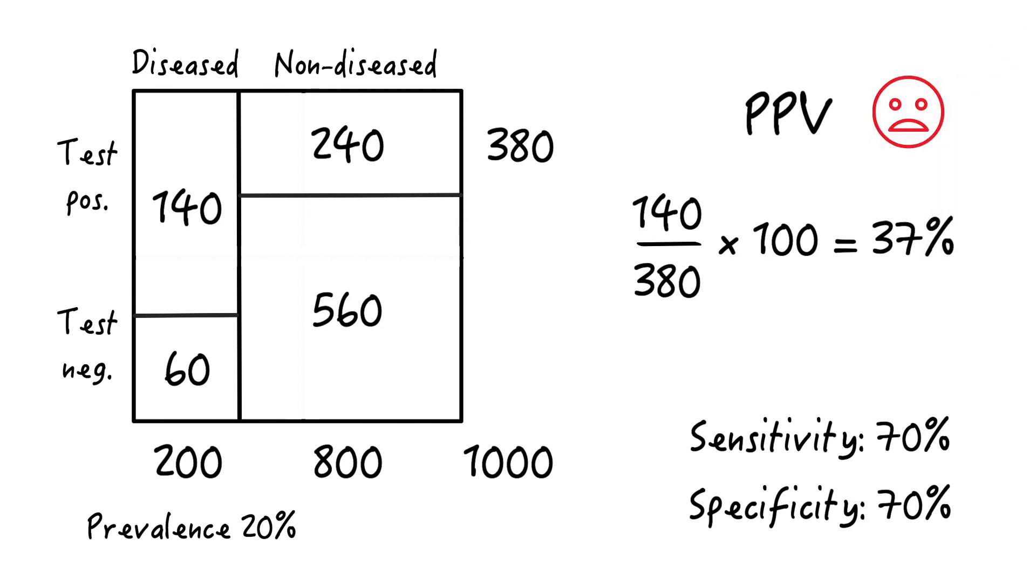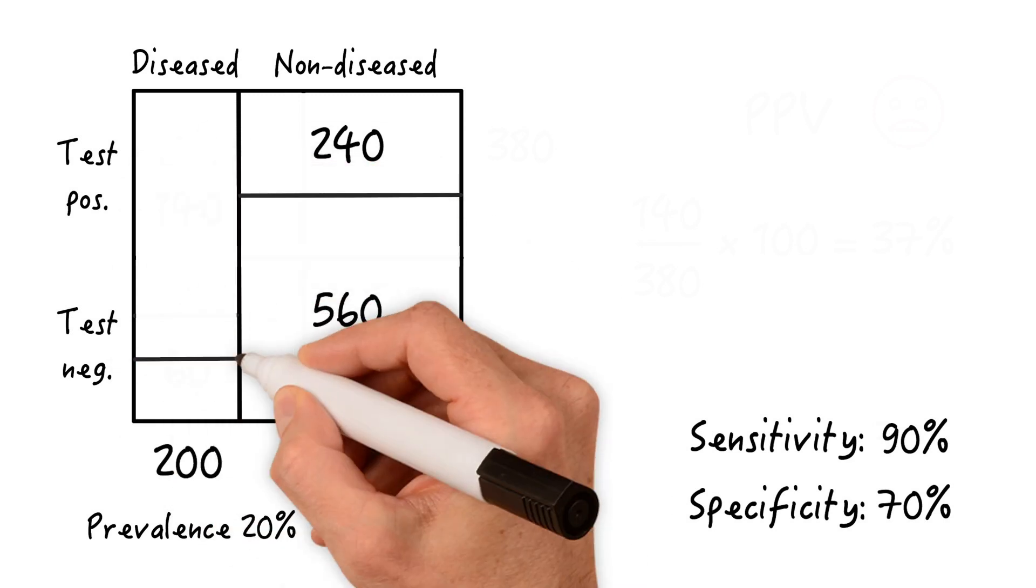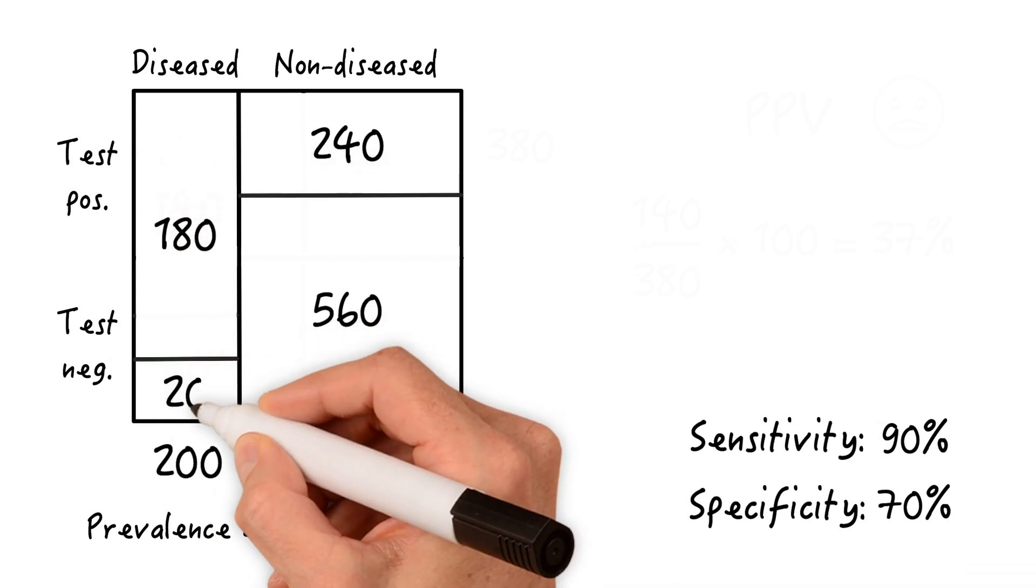Now, let's see what happens to the positive predictive value if we change sensitivity to, let's say, 90%. So now, out of the 200 diseased, we're going to pick up 180 people and we'll miss 20. Nothing changes on the right side since specificity stays the same at 70%.